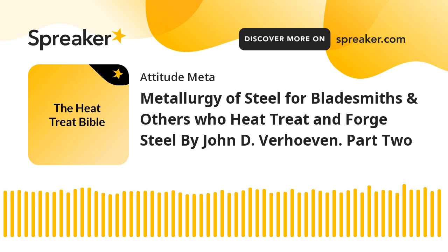When C is added to austenite to form a solid solution, as illustrated in Fig. 3.1, the solid solution has the same FCC crystal structure as in pure iron. As discussed with reference to Fig. 3.2, the C from the graphite just fits in between the iron atoms; the crystal structure remains FCC, the only change being that the iron atoms are pushed very slightly farther apart. Pure austenite and austenite with C dissolved in it are both the same phase. Hence, austenite with C dissolved in it and ferrite with C dissolved in it are two different phases, both of which are steel.